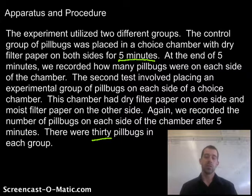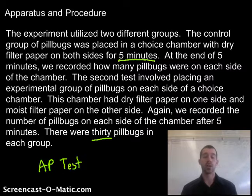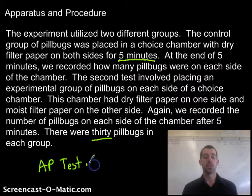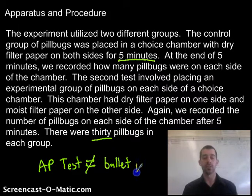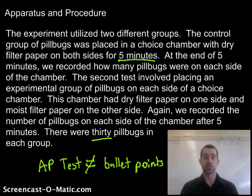Most of the procedures you've seen before have been written in bullet points, but you are not allowed to write your procedures in bullet points. The reason is that on the AP test there are free response questions that ask you to write procedures for experiments, and on these free response questions they will not accept bullet points. You have to write in paragraph form. We're going to be practicing that in this class — the introduction, procedure, and conclusion all need to be in paragraph form.